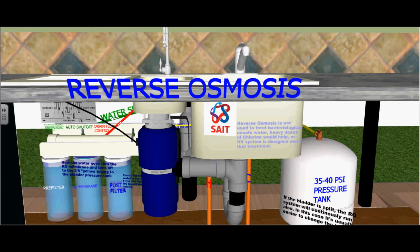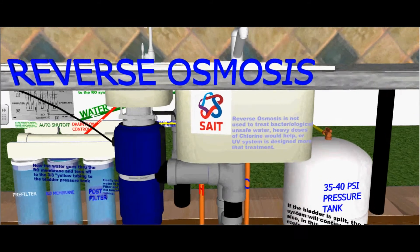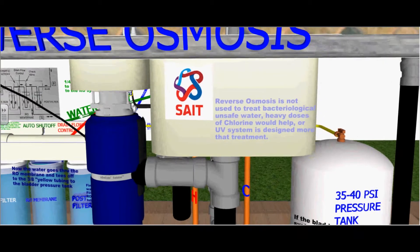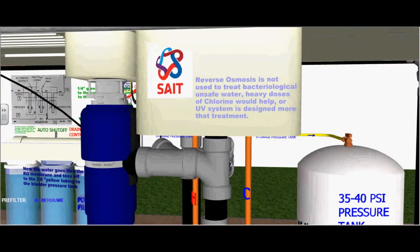Reverse osmosis is not used to treat bacteriologically unsafe water. Heavy doses of chlorine would help, or a UV system is designed more for that type of treatment.